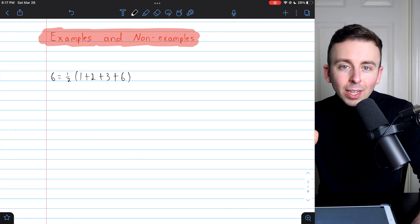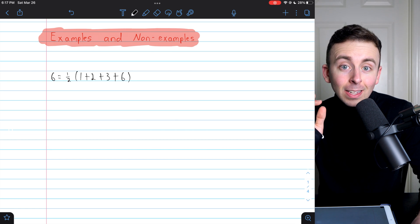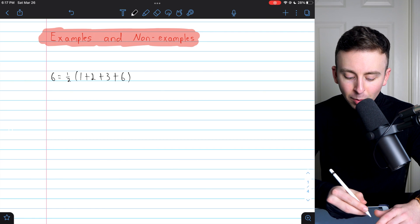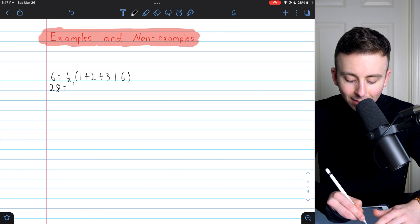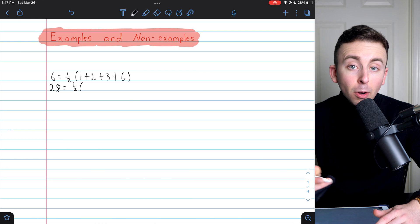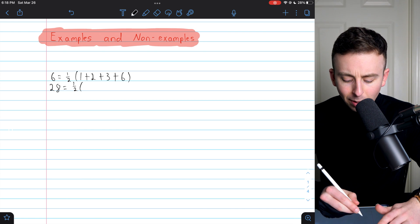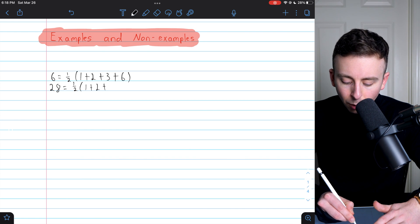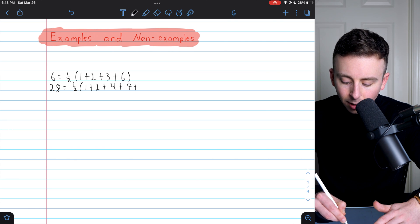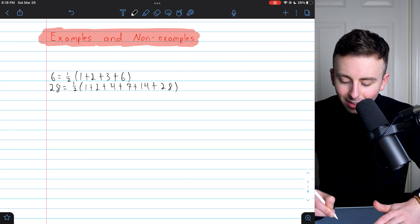What's the next perfect number? I don't want to spoil it too quickly, so take a second and try to figure it out if you're interested. Here it is. The next perfect number after 6 is 28. Let's see. Why is 28 perfect? Well, because it's equal to half the sum of its divisors. So let's go through its divisors. 1, 2, 4, 7, 14, and then 28.